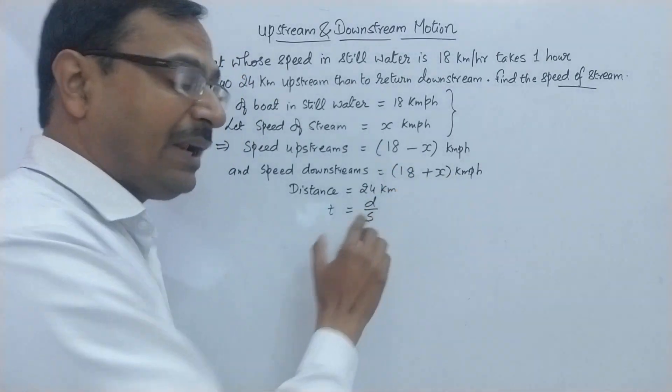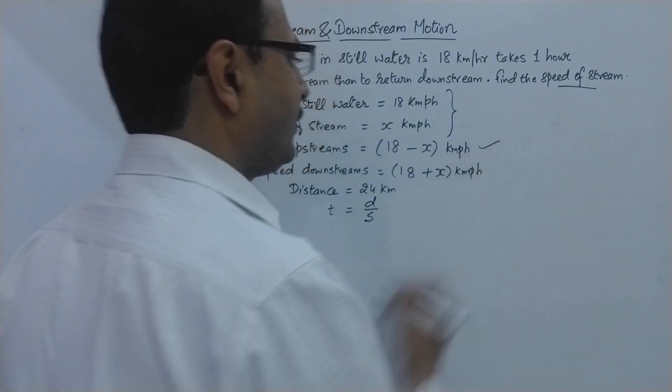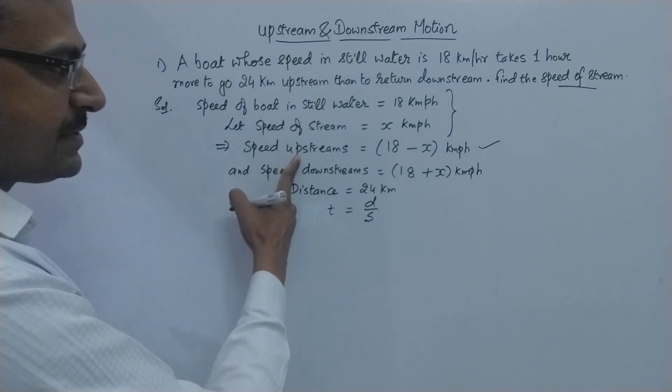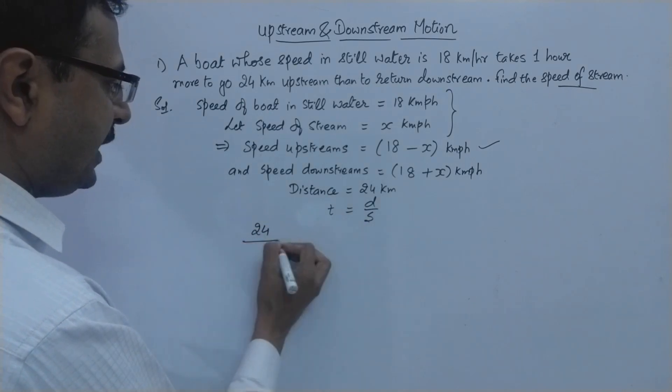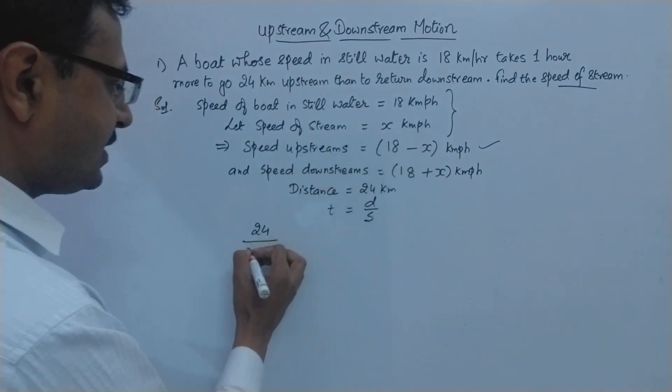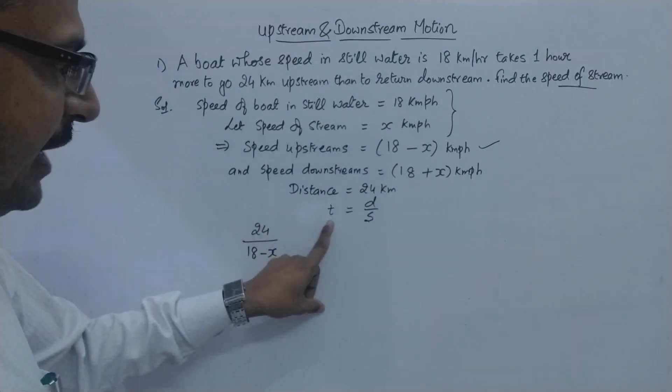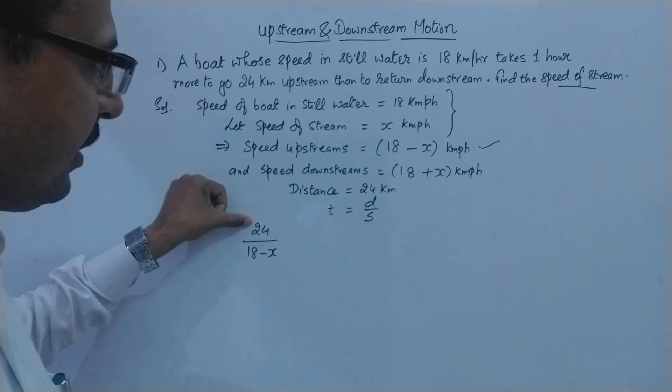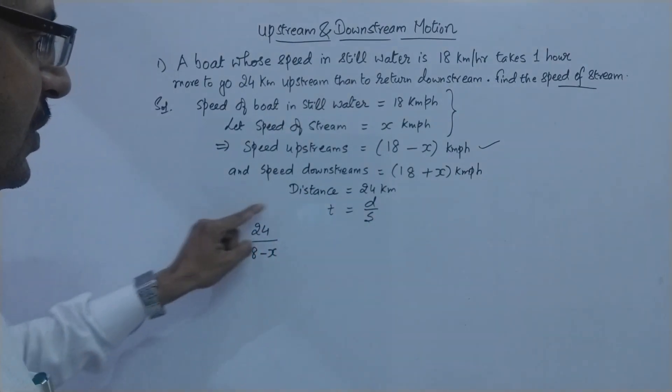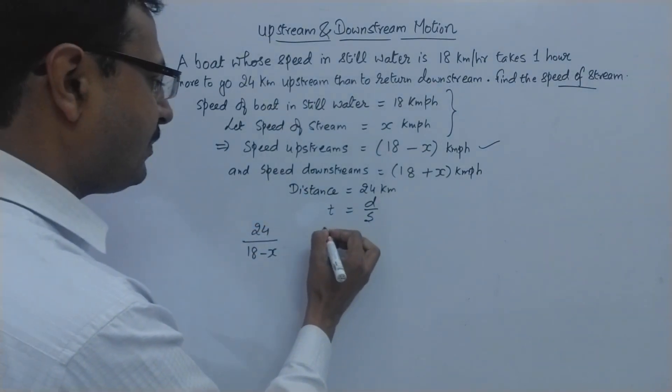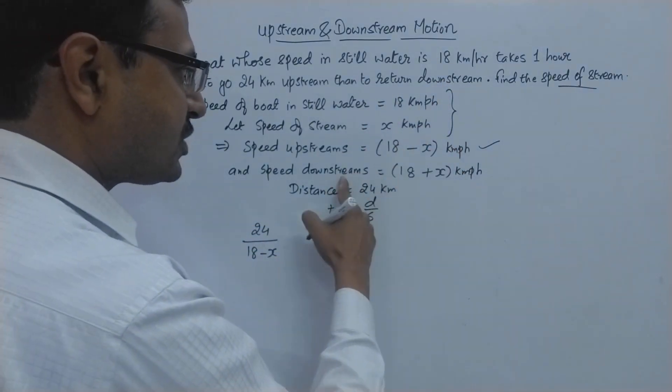So that time will come in the later half of the equation. So let us take the time to go 24 kilometer upstream so distance is 24 kilometers divided by speed. Speed upstream is 18 minus x. Now what does this represent? This represents the time taken to travel 24 kilometer upstream. So distance is 24 kilometer and speed is 18 minus x.